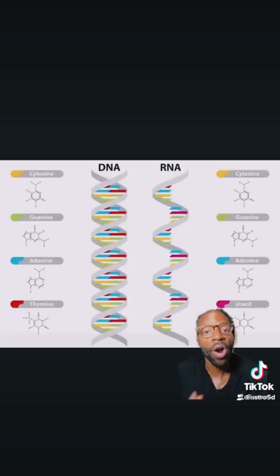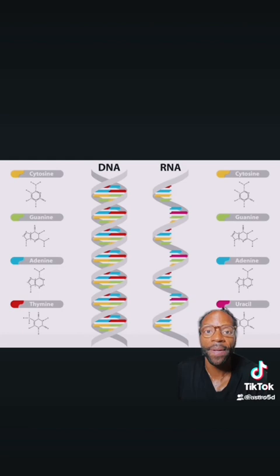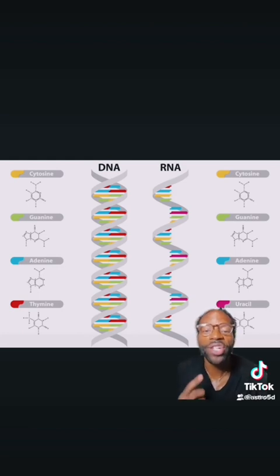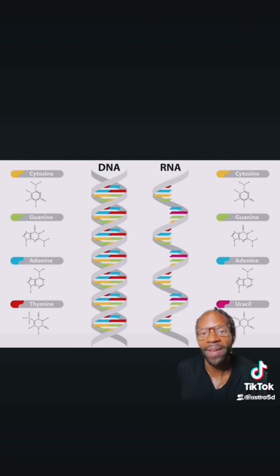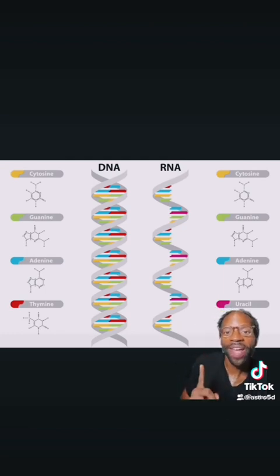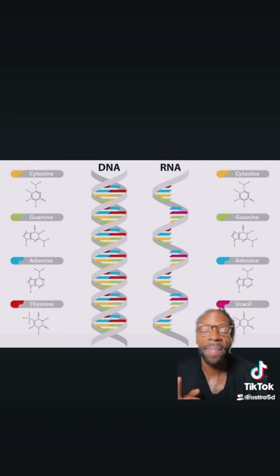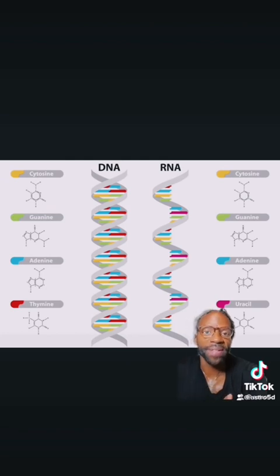DNA and RNA are types of nucleic acids. DNA contains all the instructions for your cells to grow, function, and replicate. And RNA conducts these instructions. DNA makes RNA, makes proteins.